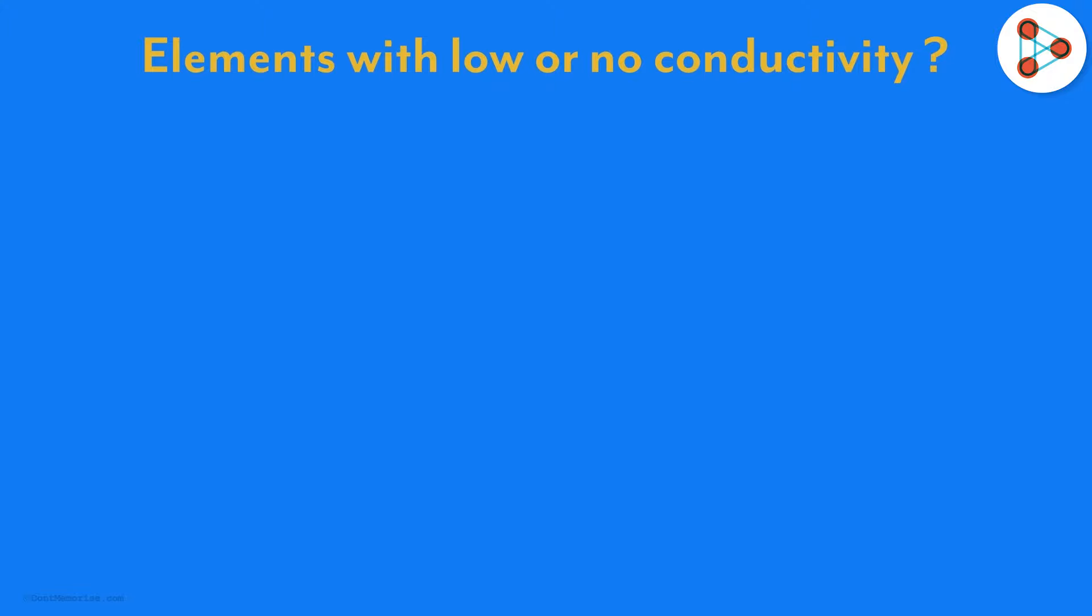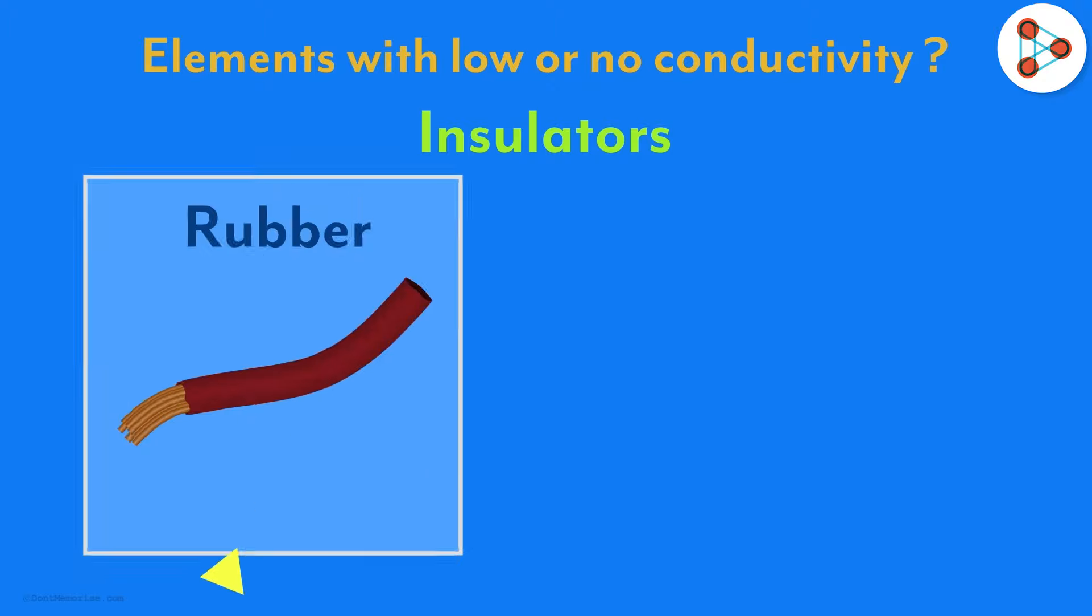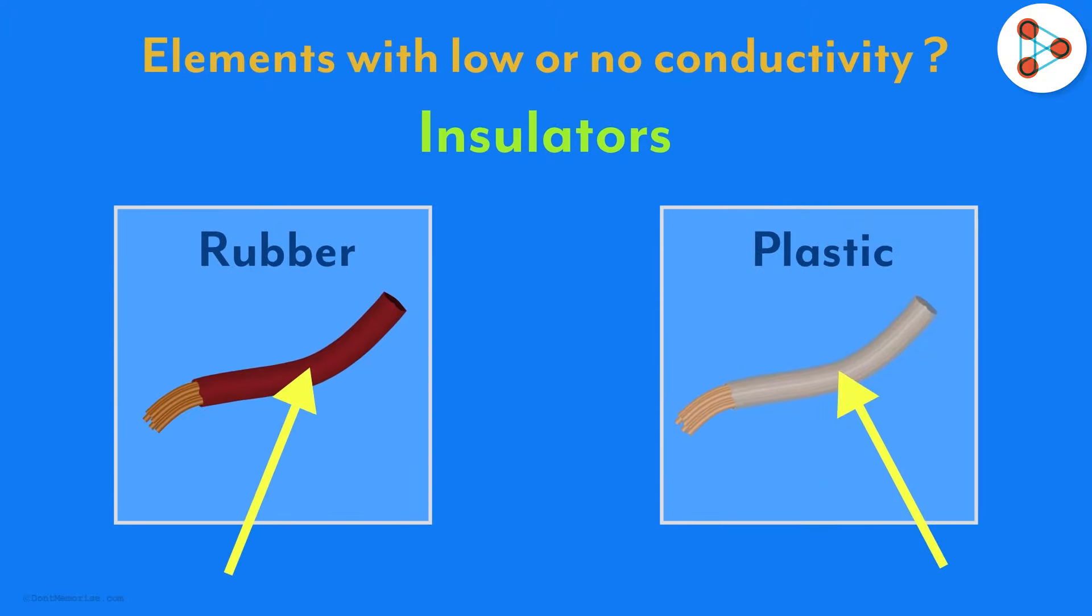What about elements with low or no conductivity? They are called insulators. They prevent the flow of electrons. Rubber and plastic are good examples of insulators.